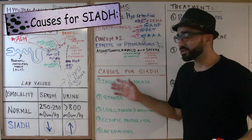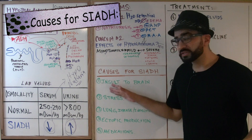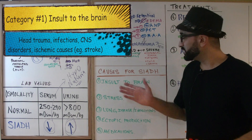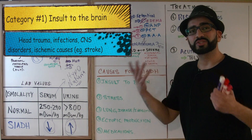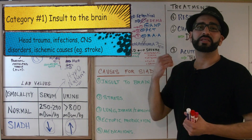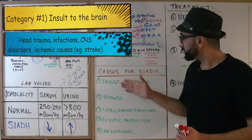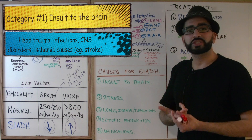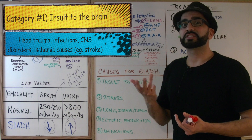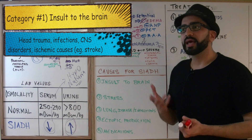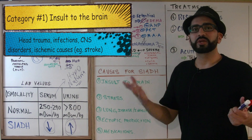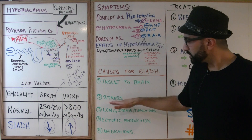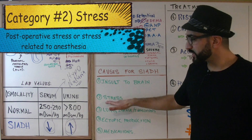Now let's talk about the causes of SIADH, organized into four or five categories. The first category is insults to the brain — think head trauma, CNS infections, CNS disorders, and ischemic causes such as strokes.